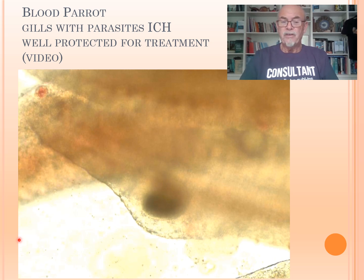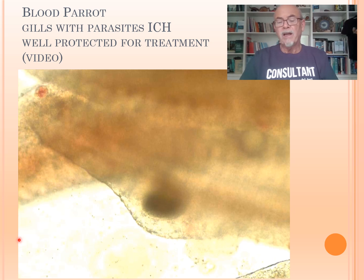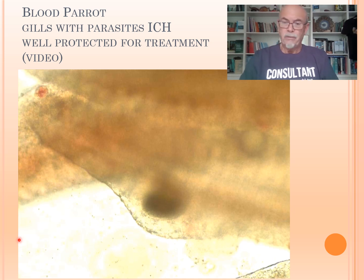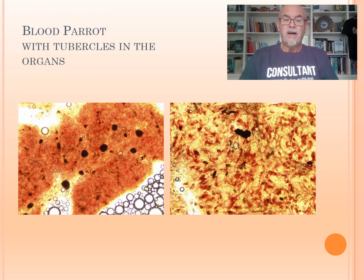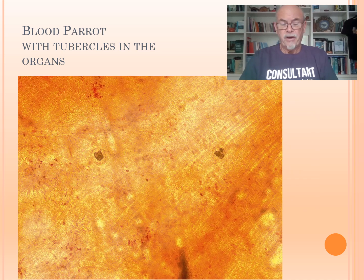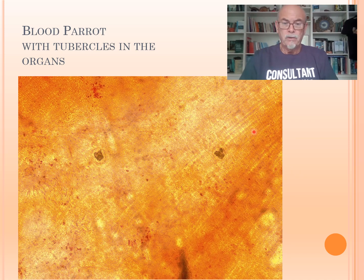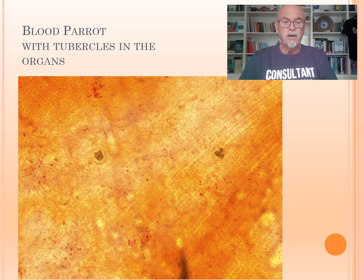You can see the parasite is well protected from any medication in the water, except maybe salt can have an impact through osmotic pressure. Common drug treatments will not kill the parasite unless you put damage to that protective mucus layer. Inside we found some tubercles in the organs — in the spleen and the kidney — and also tubercles in the intestine, suggesting a possible mycobacterium bacterial infection.